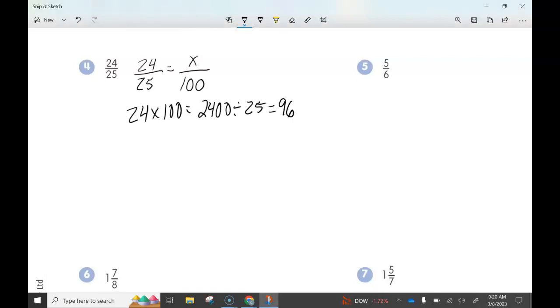Then we take that 2,400 and we divide it by 25, and that equals 96. So 24/25 equals 96% for that problem. Again, setting it up like a proportion, make sure the denominator is in line with the 100, because that's the total amount equaling 100%. If you cross multiply and then divide, you'll be able to find the percentage that the fraction equals.